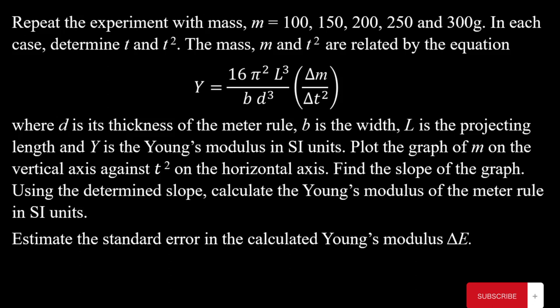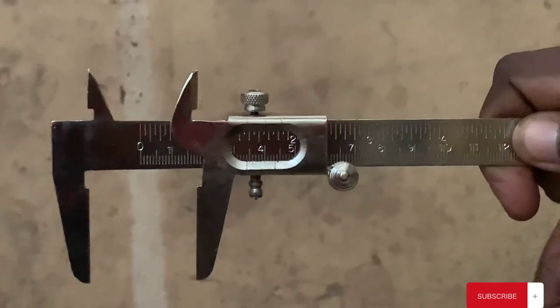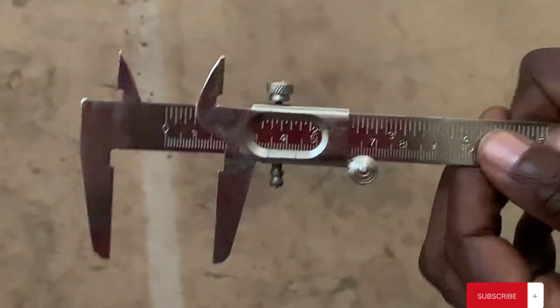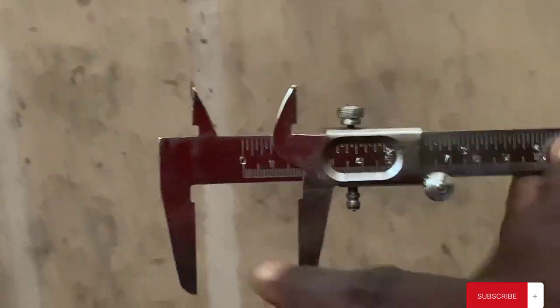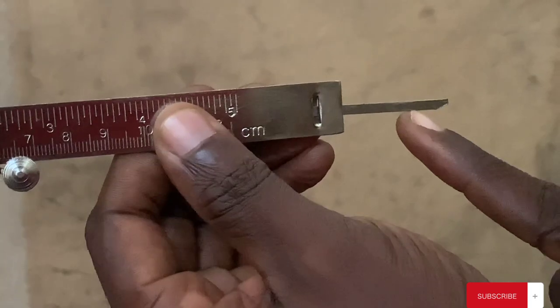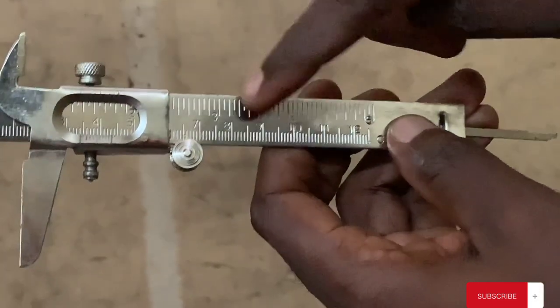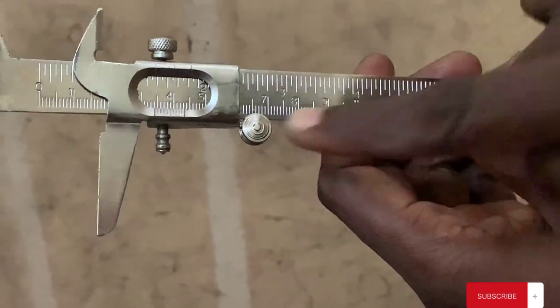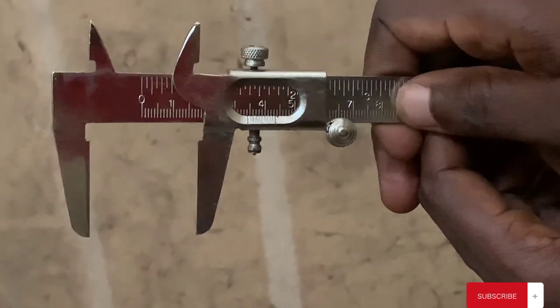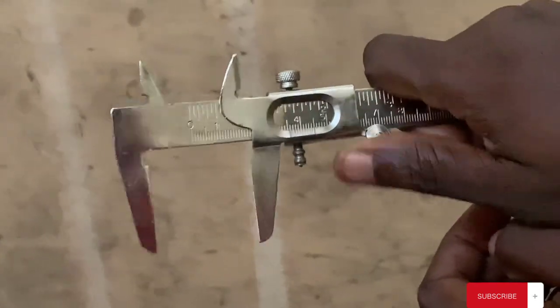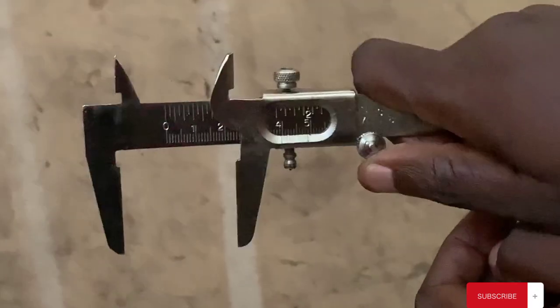This is a vernier caliper. The parts are: the thumb screw, the locking screw, the inner jaws, the outer jaws, the depth rod (or tip bar), the main scale, and the vernier scale. Using the thumb screw we can widen or decrease the jaws.